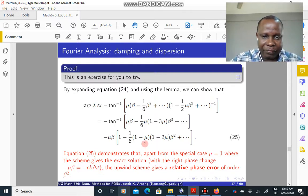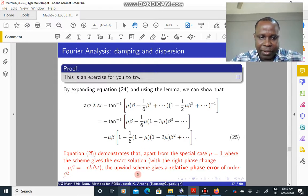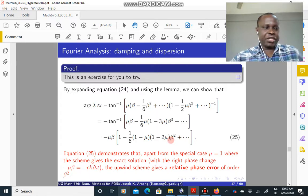But you see that if mu is not equal to 1, then you have these terms plus extra terms that is causing this expression in the way. So equation 25 basically demonstrates that apart from the case where mu equals 1, where the scheme gives you an exact solution and the correct phase changes, you have a relative phase error with order beta squared. So this factor here plus these other factors is what is causing the dispersion in the upwind scheme.